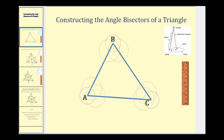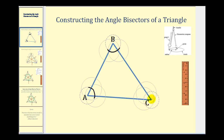We'll need a compass and a straight edge. The first step is to place the point of the compass at each vertex and then swing an arc so that it intersects both sides of each angle. So if we put the point of the compass at vertex A, the first arc might look something like this. I'll leave the radius the same and do the same at vertex B and vertex C, swinging an arc at each.